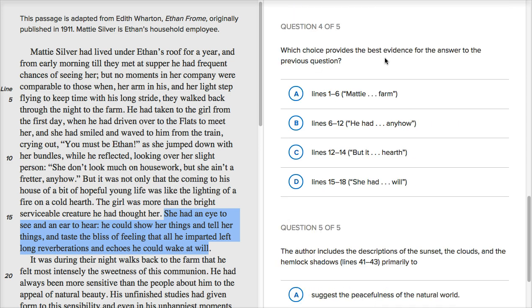Question four, which choice provides the best evidence for the answer to the previous question? Well, actually, I would, let's see. I think I highlighted them. She had, the girl was more than the bright, serviceable creature he had thought her. She had an eye to see and an ear to hear. He could show her things and tell her things. So, let's see, which of these are that? This is like line 15 through 16, 17, 18.